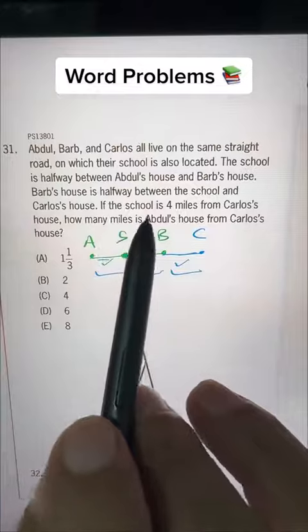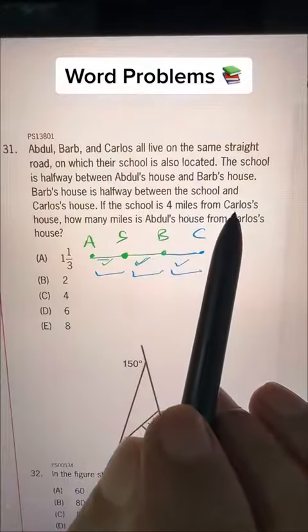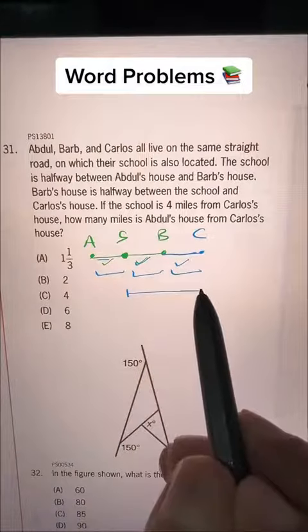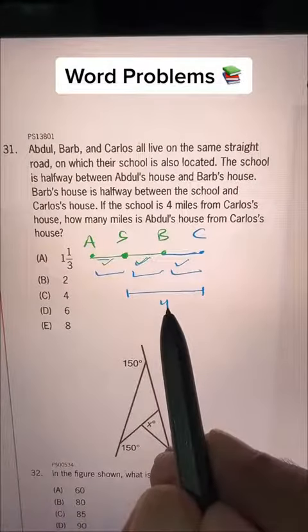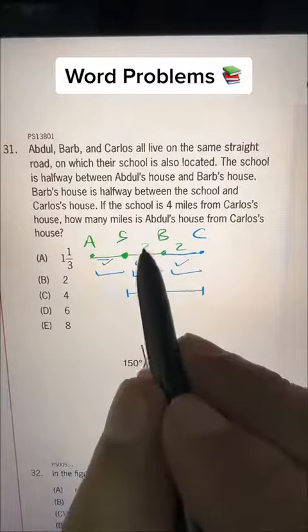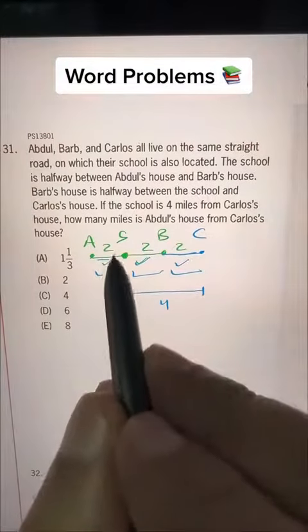Okay, if the school is four miles from Carlos's house, so from here school to this Carlos, it's four. That means this is two and this is two because total four, and this is also two.